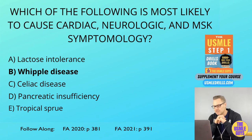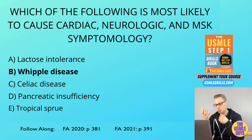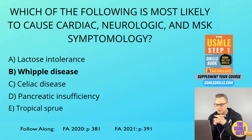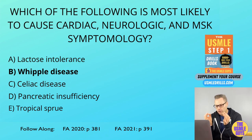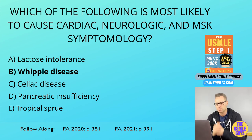Tropical sprue affects the small bowel and is typically seen in people who live in or have visited the tropics. It results in decreased mucosal absorption in the duodenum and jejunum, but it can make its way to the ileum, at which point patients will experience a deficiency of both vitamins B9 and B12 — that's where they're absorbed.